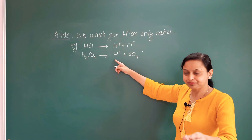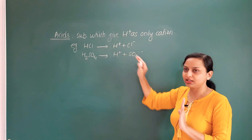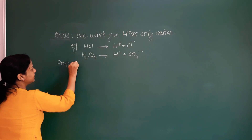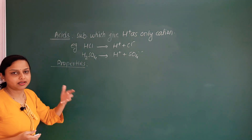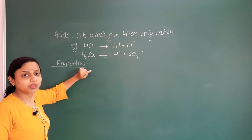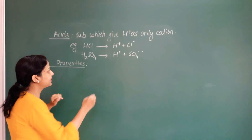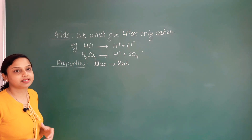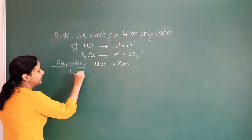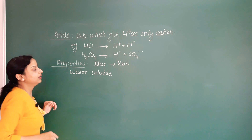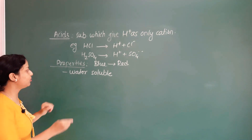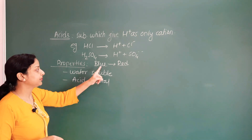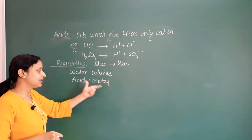These acids are synthetic — made in the laboratory. These acids have basic information and properties. If you dip blue litmus paper into an acid, the blue litmus paper turns red. Acids also react with metals, and from this reaction hydrogen gas is released.